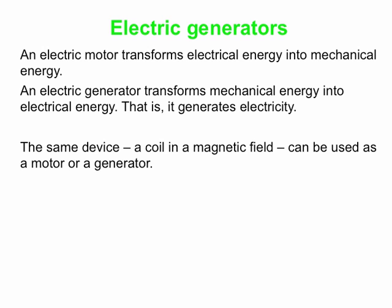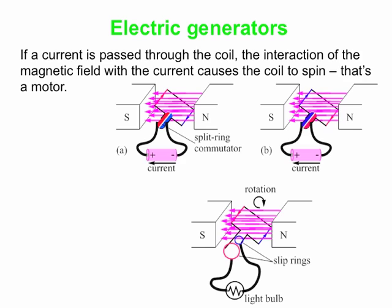And interestingly enough, you can use exactly the same device, which is a coil in a magnetic field. And you can use it as a motor or as a generator. Depends which way you run it. So we'll look at that. We've got a couple pictures at the top, A and B.